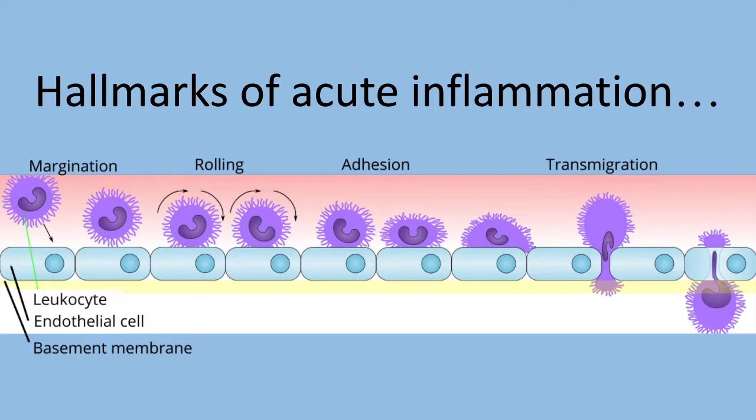The morphologic hallmarks of acute inflammatory reactions are the dilation of small blood vessels and accumulation of leukocytes and fluid in the extravascular tissue.